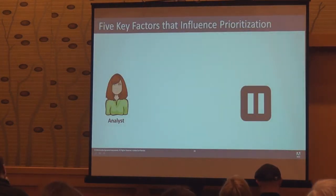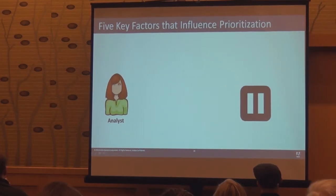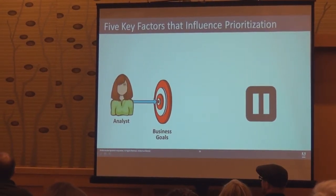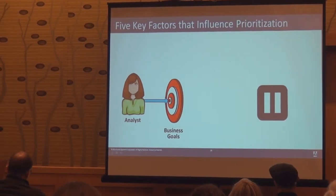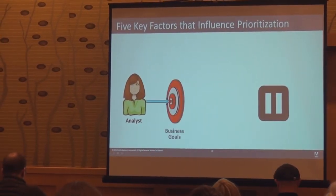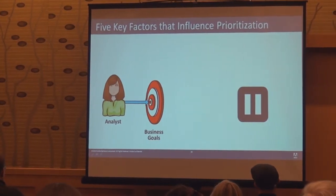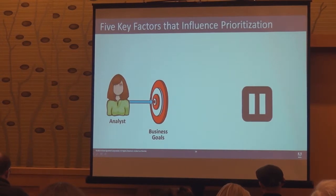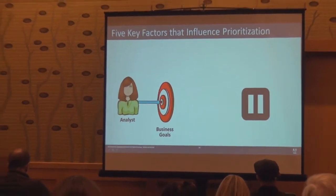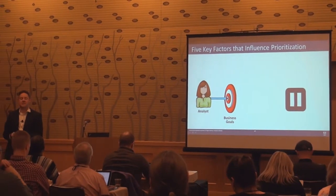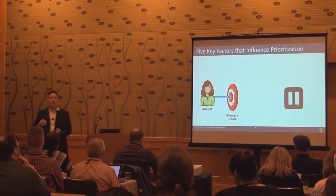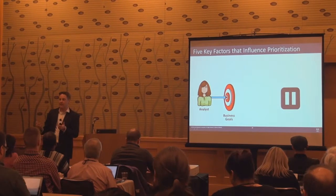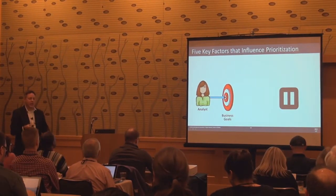So, prioritize for impact. As an analyst, the first thing I need to look at is business goals. This applies to big data, this applies to anything. If I understand what the business is trying to achieve, what is important, and even prioritize those business objectives - because not all business objectives are equal, some are more important than others - that's my first lens. The next thing I look at is my ability to influence. If I can't influence something, my time is finite, and I'm not going to waste time on something I can't influence.